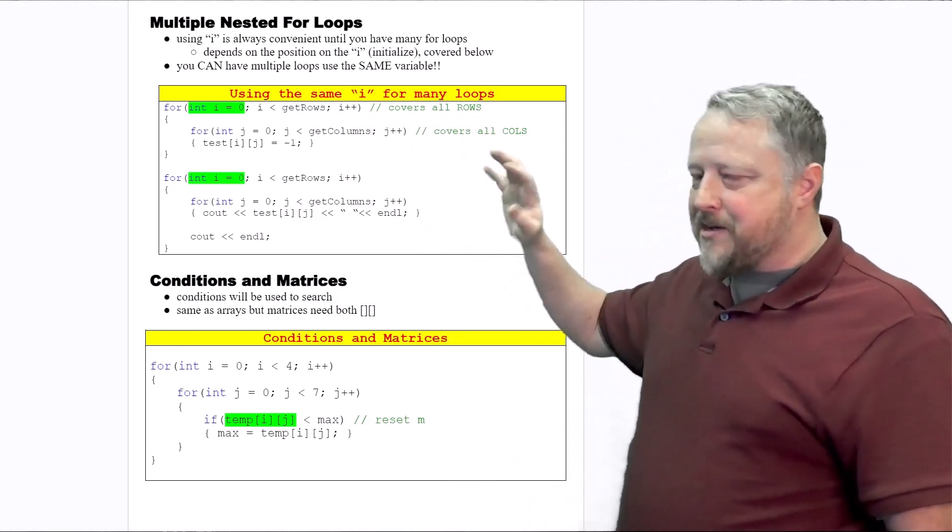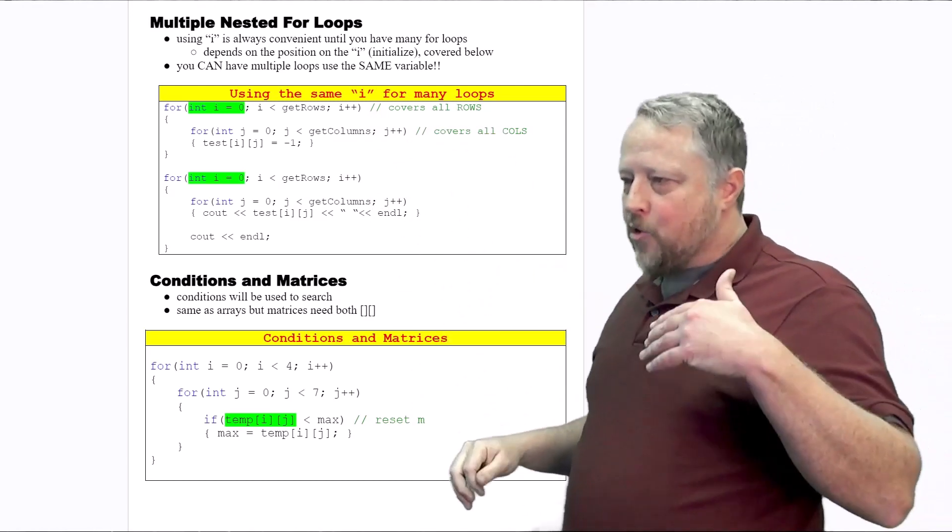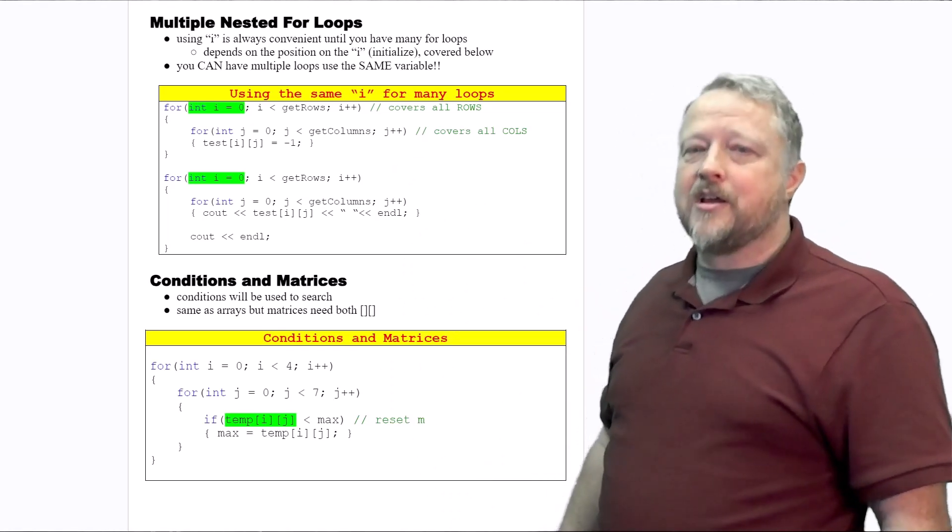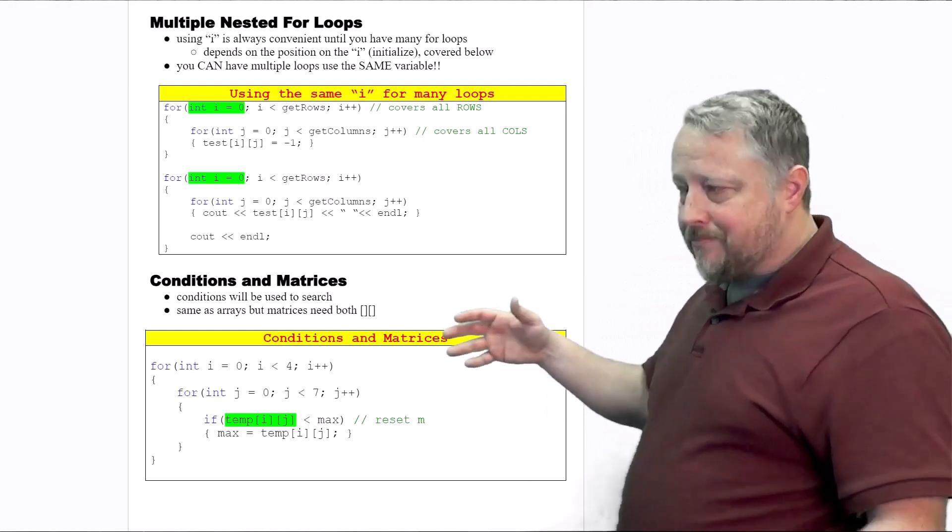So it's overall the same idea as what we had in our regular for loops for arrays. Same thing I can get away with multiple or nested loops in our matrices.